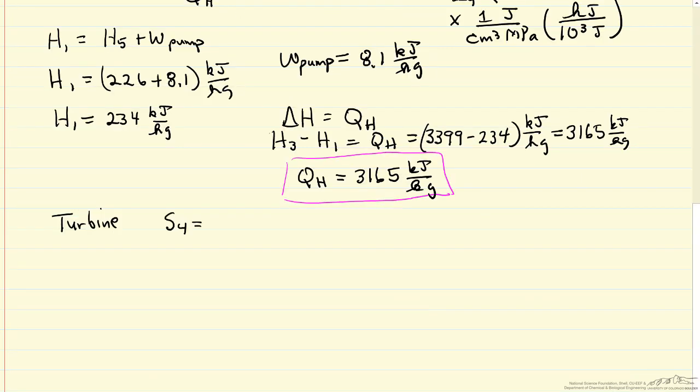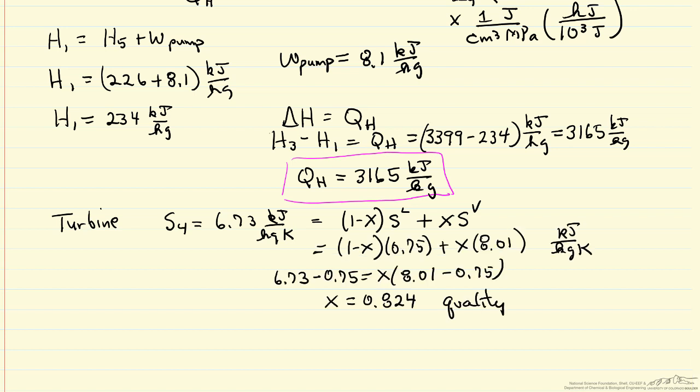The entropy, 6.73 kilojoules per kilogram Kelvin, that's what's leaving the turbine because that's what entered. At 15 kilopascals, it's somewhere between liquid and vapor. So we have one minus x, the fraction of liquid, times entropy of the liquid at those conditions, and x, which is quality, is the fraction of vapor. I'm just going to substitute the numbers in from the steam tables at 15 kilopascals saturation condition. Here's the value for the quality, 0.924.